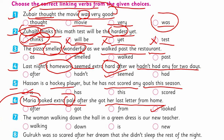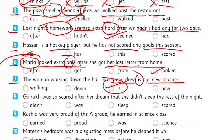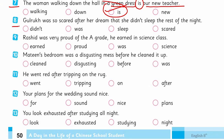The seventh one: 'The woman walking down the hall in a green dress is our new teacher.' We have 'is' here as the linking verb — no need to choose another option. The eighth one: 'Guru was so scared by her dream that she didn't sleep the rest of the night.' We have 'was' here as the linking verb, which is connecting them. 'Was' is the appropriate option for it.